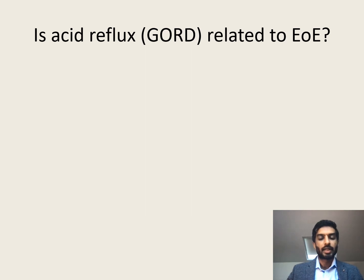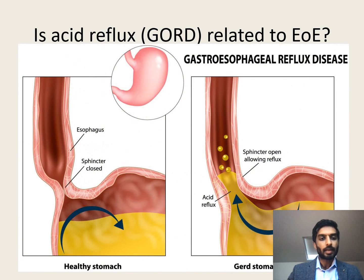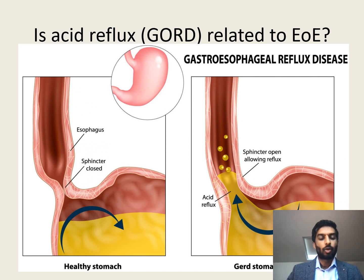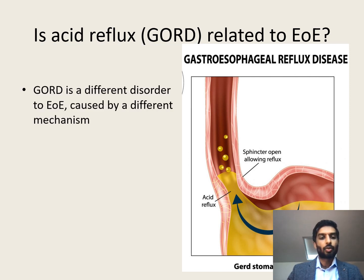The final question I'll address today is whether acid reflux or GORD is related to EOE. To answer this I need to explain what exactly gastroesophageal reflux disease or GORD is. Acid reflux is a condition where normal stomach acid inappropriately rises up into the esophagus where it's not meant to be. Once this stomach acid enters the esophagus it can lead to inflammation and cause troublesome symptoms. So it really is quite a different disorder to EOE — whereas EOE is an allergic condition, GORD or acid reflux is a mechanical condition caused by inappropriate acid within the esophagus.